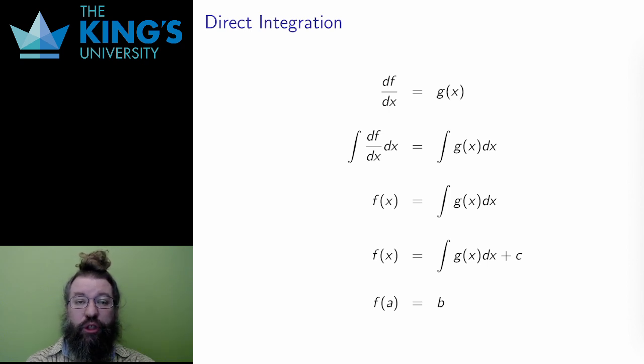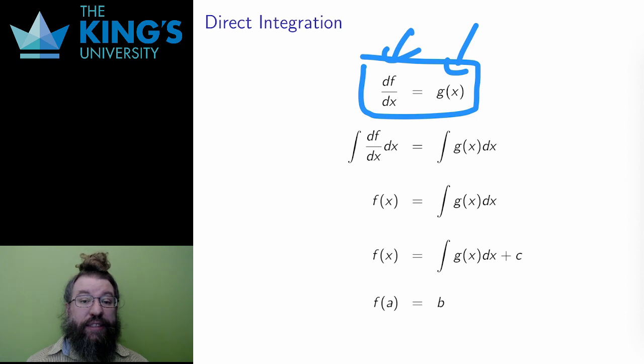So, let me start with the easiest version of a differential equation. Consider this equation. The left is the derivative of some function f of x. The right is some other function g in the same independent variable. This is an equation that very explicitly tells me what the derivative of f is. It is this other function g. To solve this DE, I just integrate both sides, since the integral gets rid of the derivative.